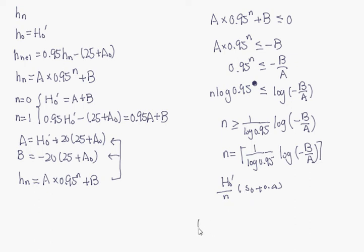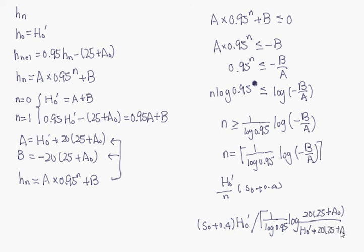So this is a solution of question 6.3. We can write this as (S0 plus 0.5) times H0' over n, and n is 1 over log 0.95 times log minus B, so it is 20 times (25 plus A0) over A, where A is H0' plus 20 times (25 plus A0). Okay, so this is question 6.3.